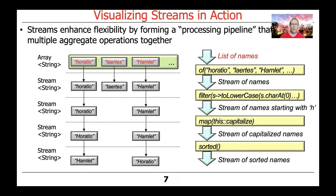So what we have here is we start out with a list or array of names, and those names are then transformed by the 'of' factory method, and we end up with a stream of names. So where before we had an array of Horatio, Laertes, and Hamlet, we now have a stream of Horatio, Laertes, Hamlet, and other Hamlet character names.